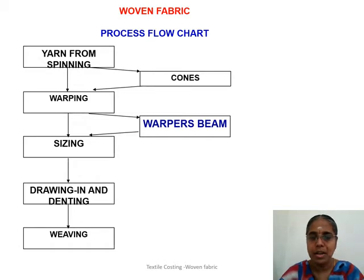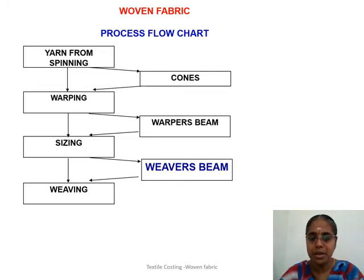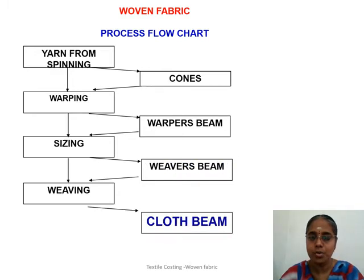The yarn wound onto the beam is called the warper's beam. This n number of warper's beams — 8, 10, or 12 warper's beams with fewer ends — are fed to the sizing process, and the sized yarn is wound into the weaver's beam. Since it is sent to the weaving process, it is called the weaver's beam. The beam fed for weaving is called the weaver's beam, which will have the actual number of ends across the whole fabric width. This is fed to the weaving machine and the weaving process output is the cloth wound onto the cloth beam.